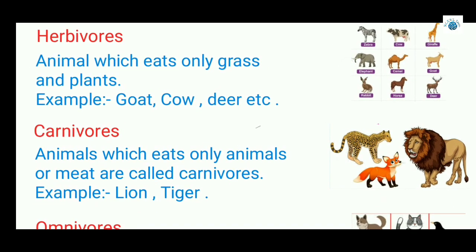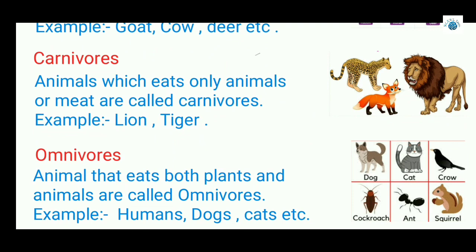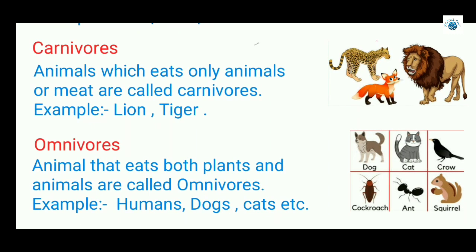Carnivorous animals which eat only other animals or meat are called carnivorous. For example, lion is a carnivorous animal — it eats another animal as food, like deer. Similarly, tiger is also carnivorous.